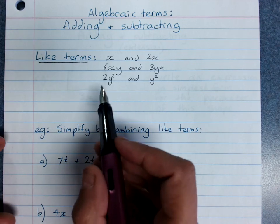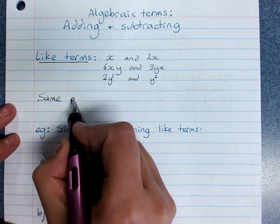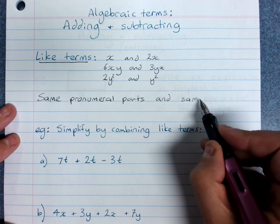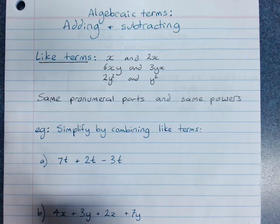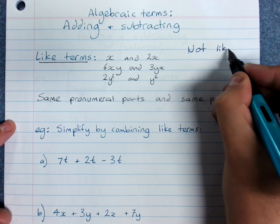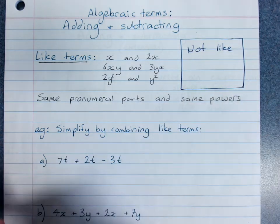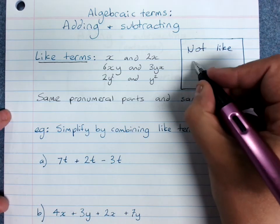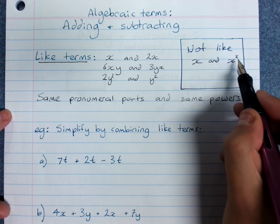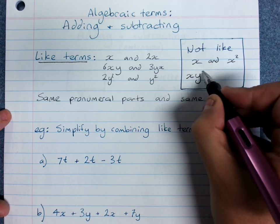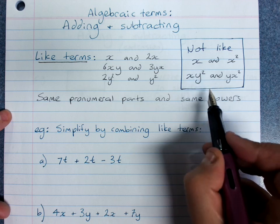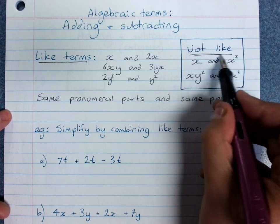So like terms: same pronumeral parts and the same powers of those pronumerals. If we had a set of not like terms, then x and x squared are not like terms - same pronumeral but different power. xy squared and yx squared are not like terms. Same pronumerals, but the y is squared here and the x is squared here. So there's some traps to not fall into.